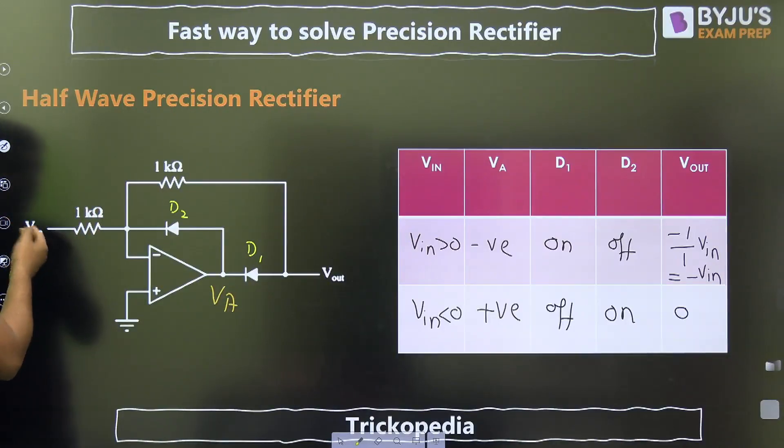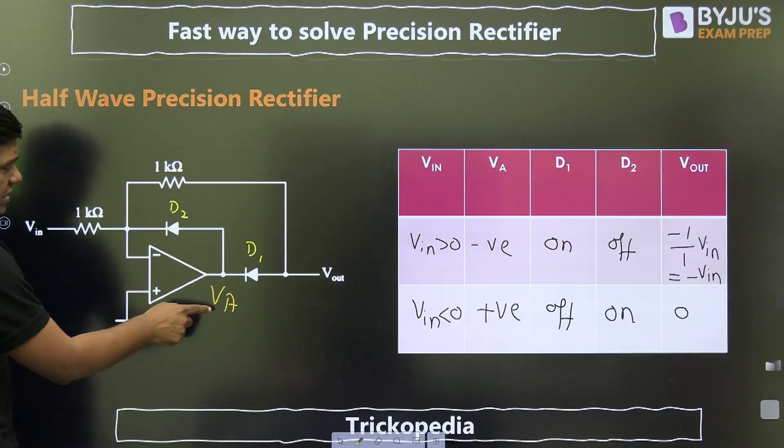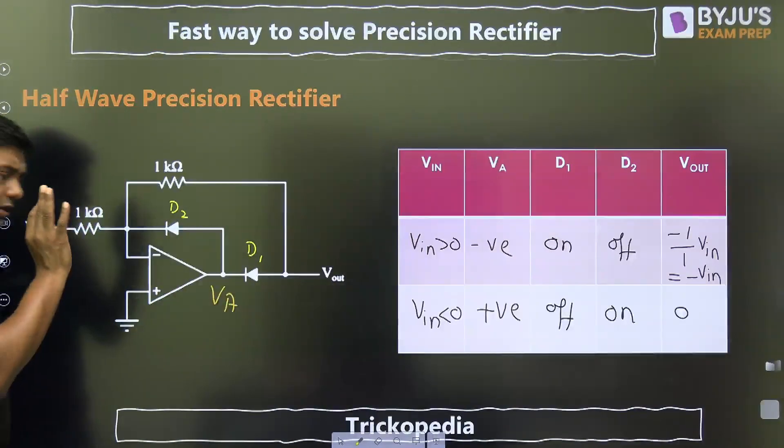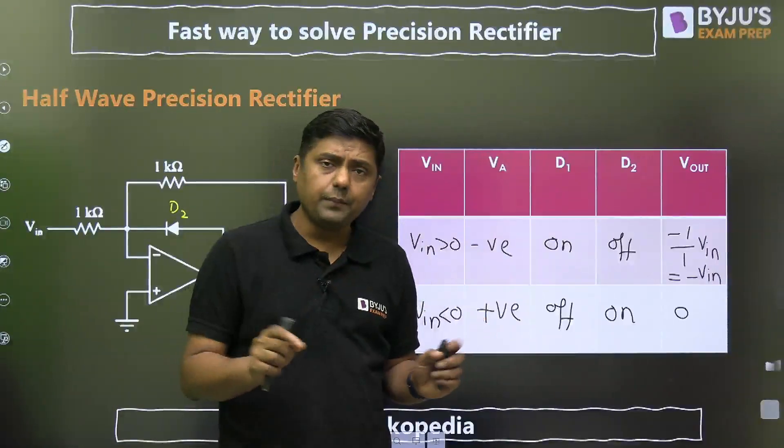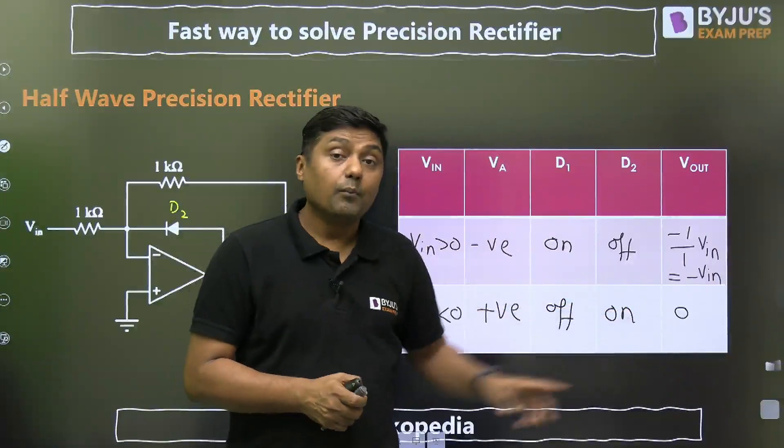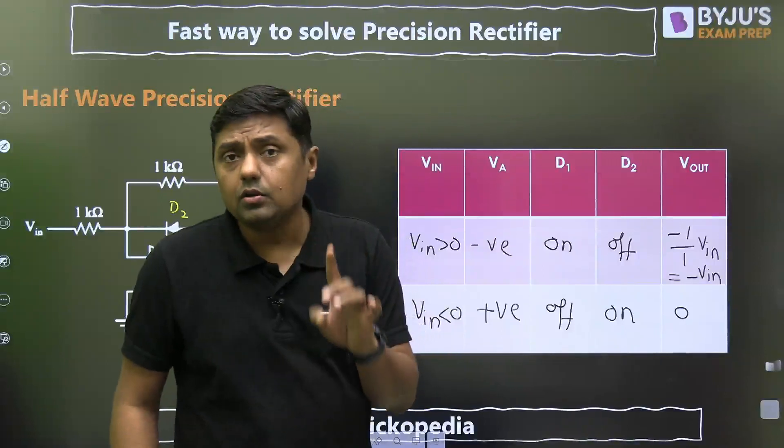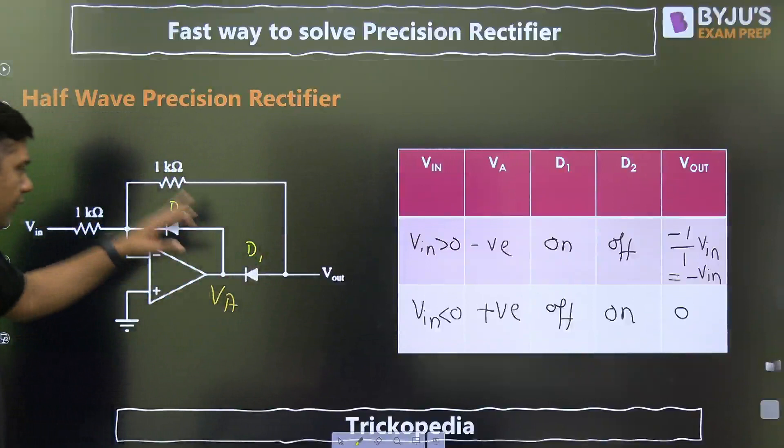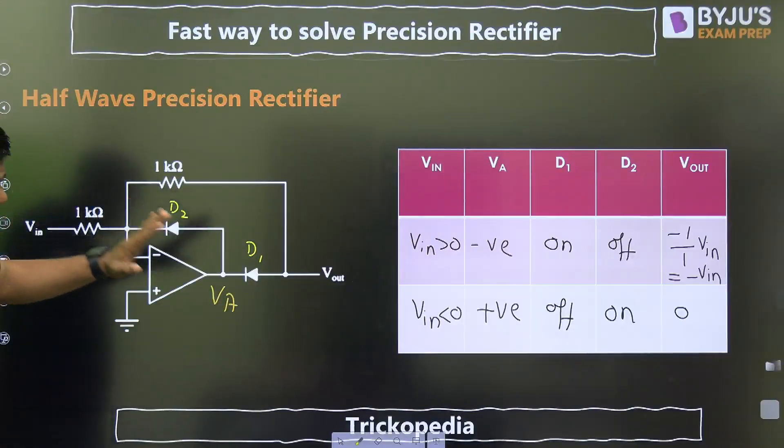For negative half, it is negative, but VA is positive. Because of positive value, D1 is off. Remember, once D1 is off, output is 0. But operational amplifier will not go into saturation. This diode will provide the negative feedback. So, that is the case.